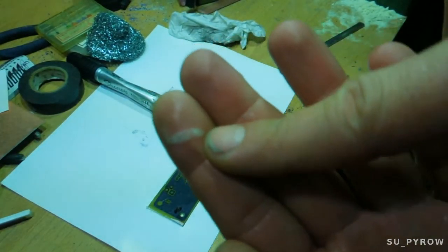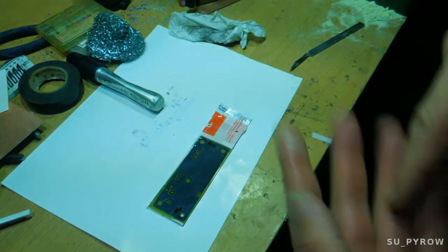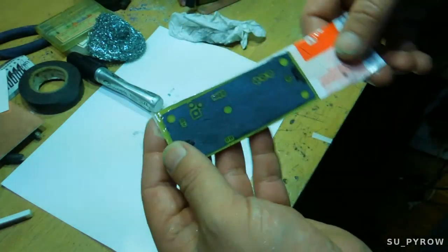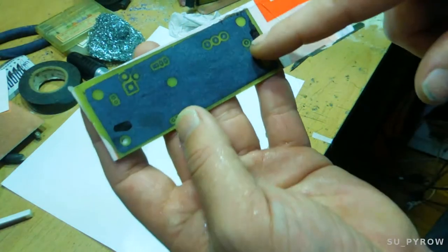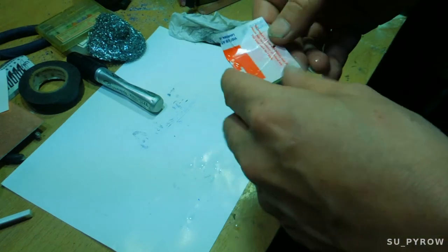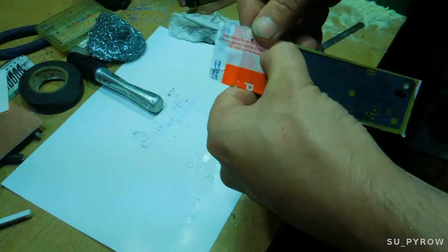Might want to wear gloves. That's a nice chemical burn right there. Anyway. Now we're all done etching the reverse end. Let's take it apart and we'll put it up to the light and we'll see if everything lines up.